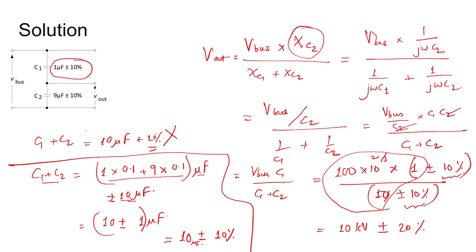So what is it coming? It is coming 10 kV plus or minus 20 percent of 10, which is 2 kV. So it is either 12 kV or 8 kV.